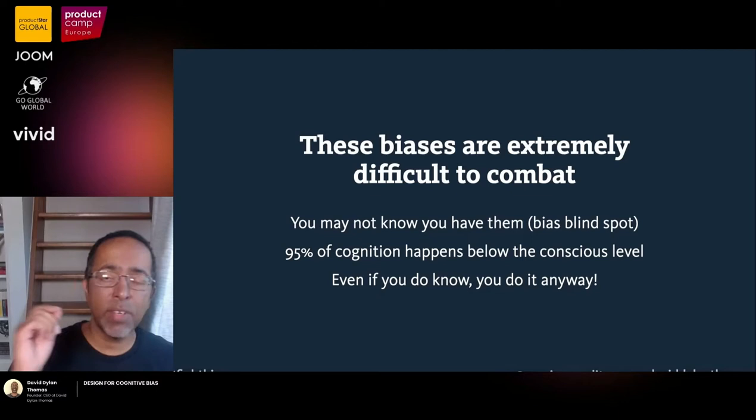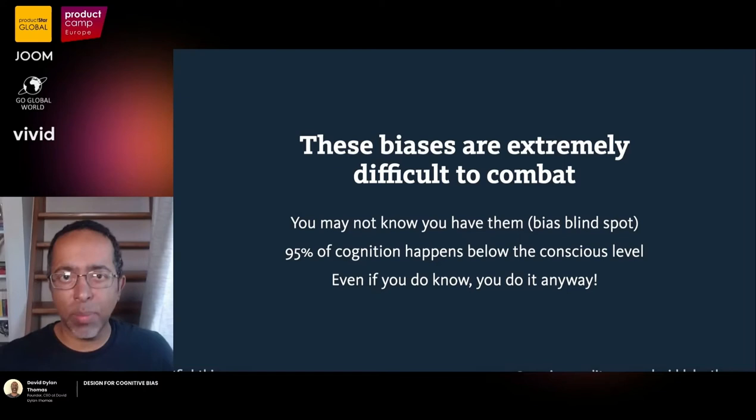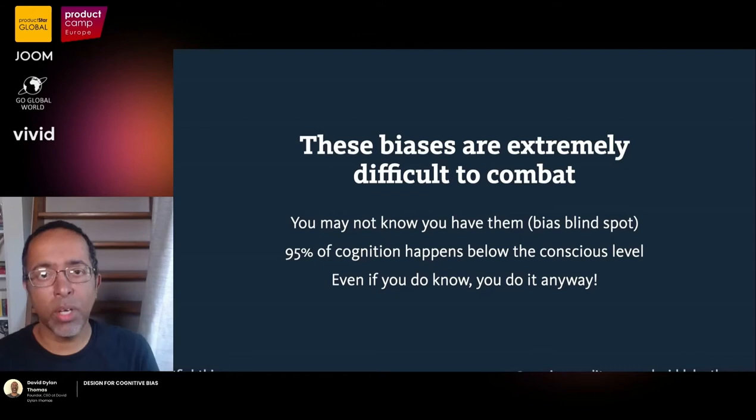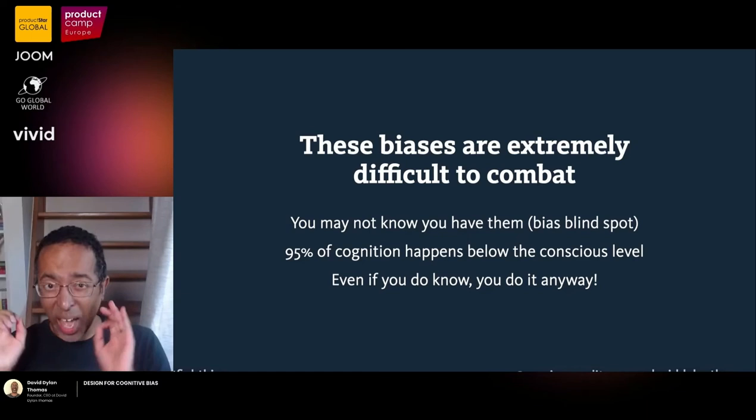There's a bias called anchoring. If I ask everyone to write down the last two digits of their phone number, then say we're going to bid on a bottle of wine, those who wrote down lower numbers will bid lower, and those who wrote down higher numbers will bid higher. I could tell you all of that before we begin the experiment — you'd still do it. In fact, I could say I will pay you cash money not to do it, and you'd probably still do it.